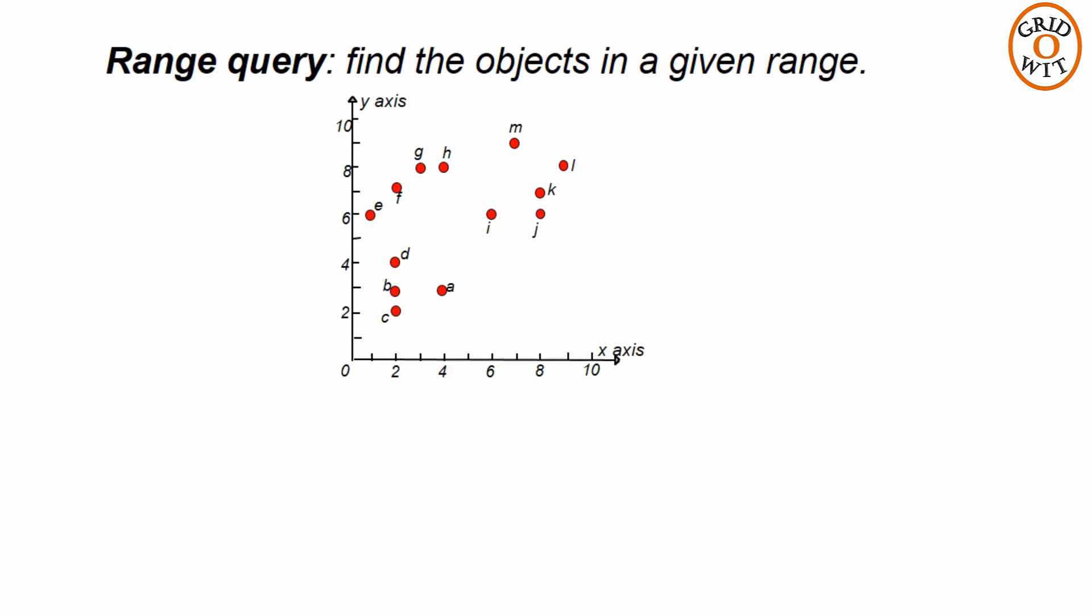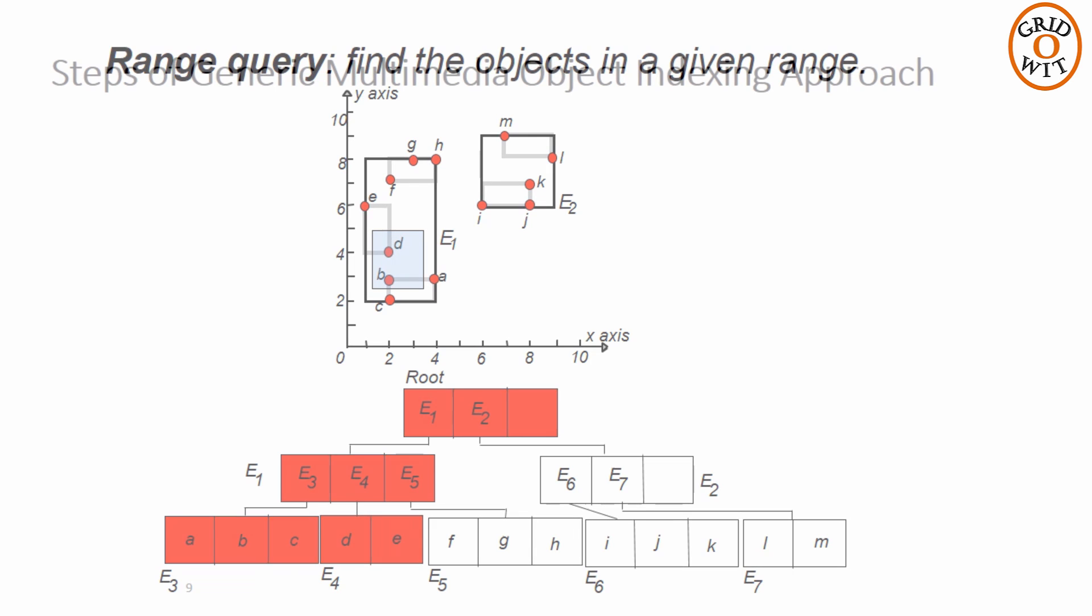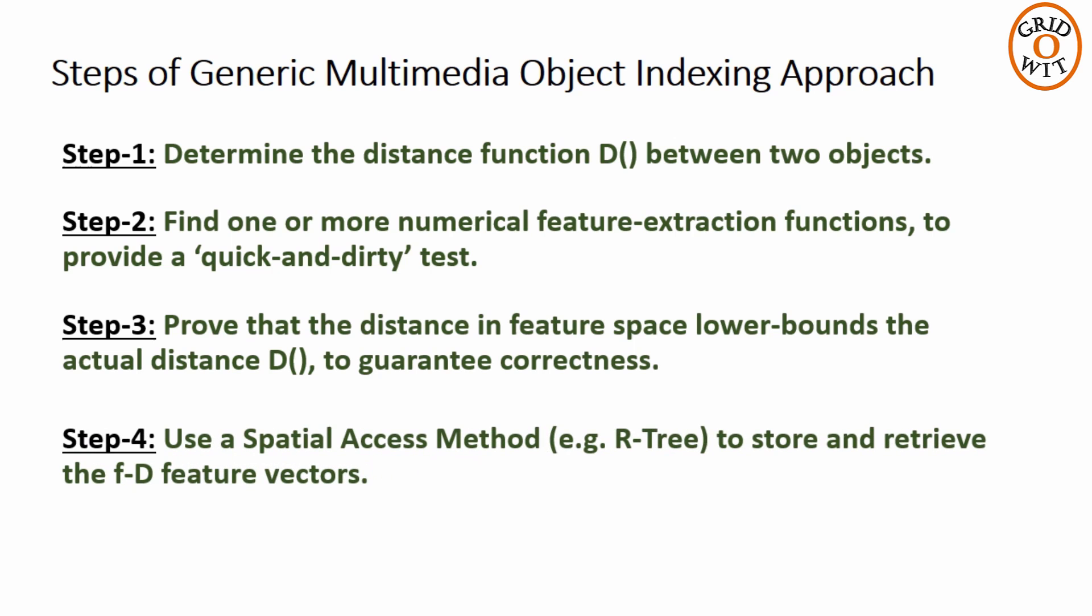During searching, suppose a query specifies a region of interest, then the R-tree will give us quickly the data regions whose minimum bounding rectangle intersects the MBR of the query region. So, these are the four steps of generic multimedia object indexing approach for fast searching.